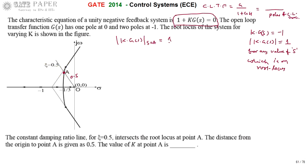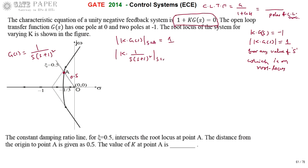G(s) is the open-loop transfer function with three poles: one at the origin and two at minus 1. So G(s) = 1/[s·(s+1)²]. Therefore, K · 1/[s·(s+1)²] evaluated at s = A equals 1. Solving this equation for a given value of A gives the required value of K. We need to find point A first, then substitute it.